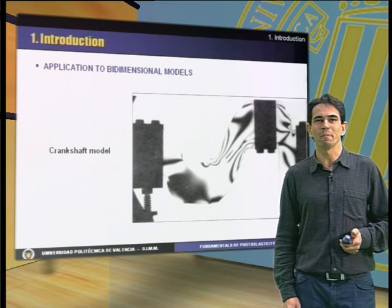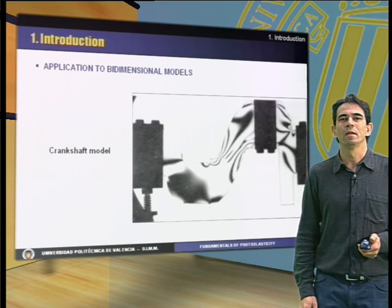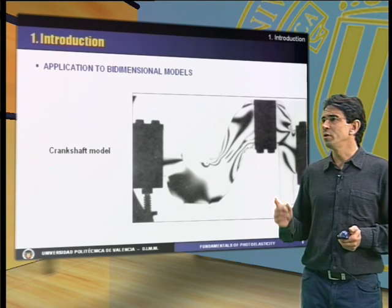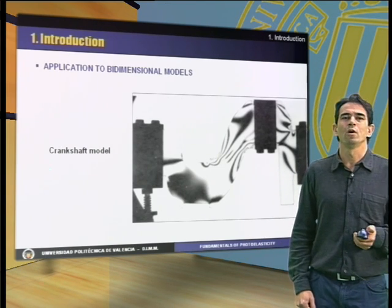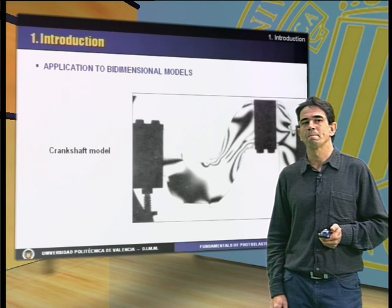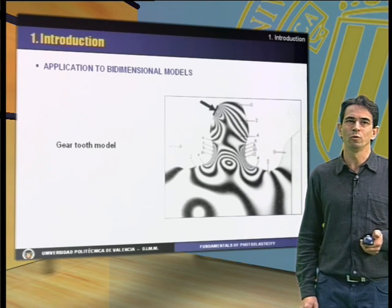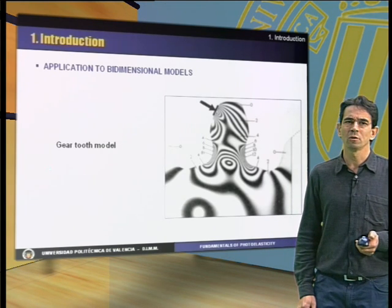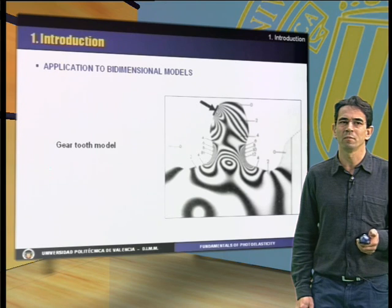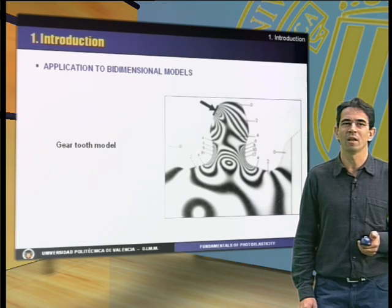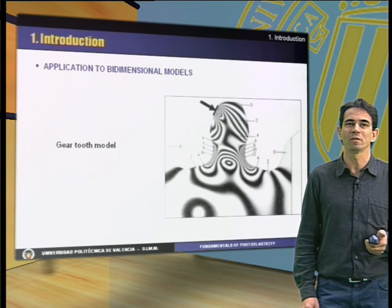Photoelastic techniques are applicable to two-dimensional models that represent the component to be analyzed. For example, the figure shows a section of a crankshaft model. Another example is the analysis of a geared tooth under load. The so-called isochromatic lines can be observed. These lines indicate the stress level at each point of the component under the applied loads.